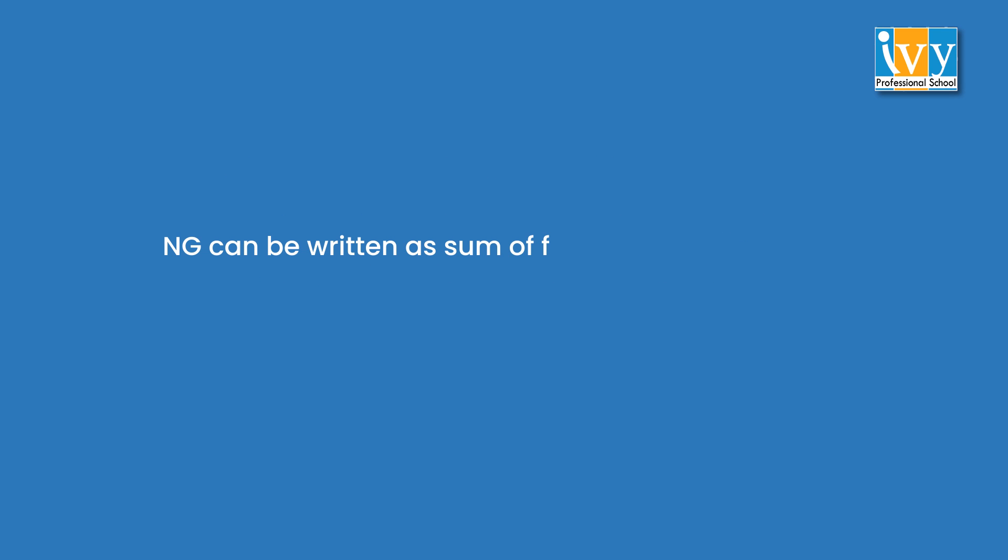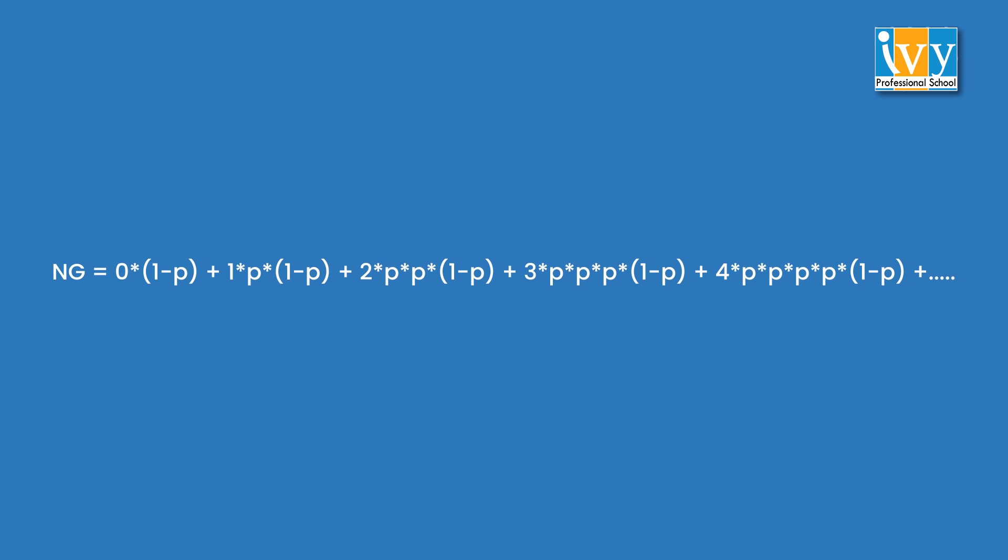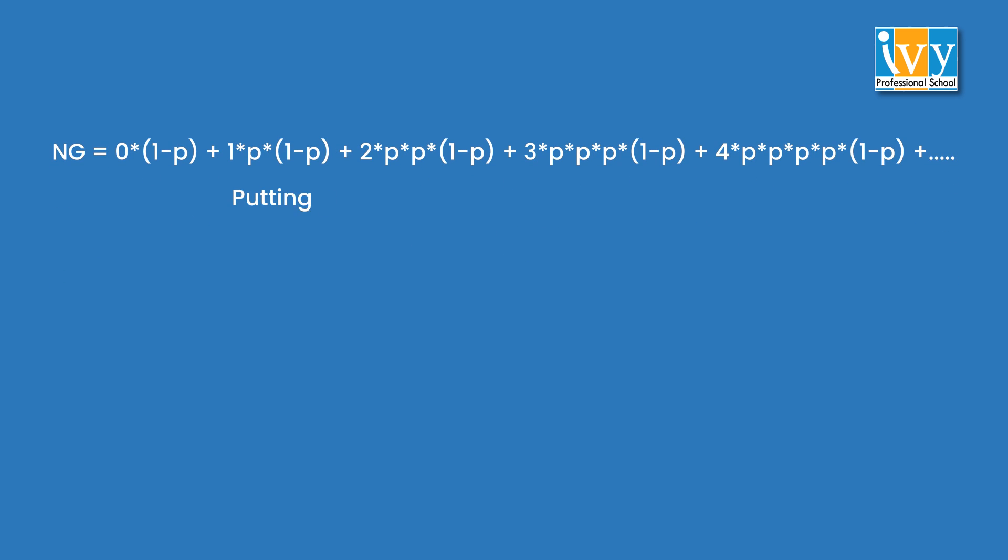NG can be written as the sum of the following infinite series. When we substitute p as half and 1 minus p as half in the above formula, the following result is what we obtain.